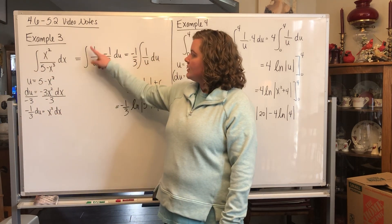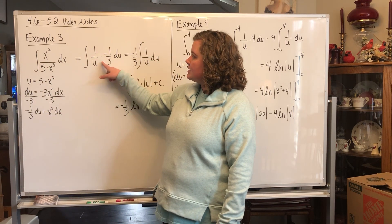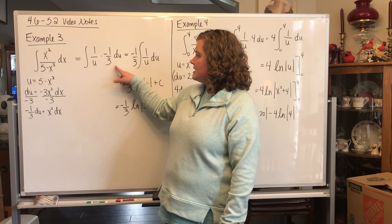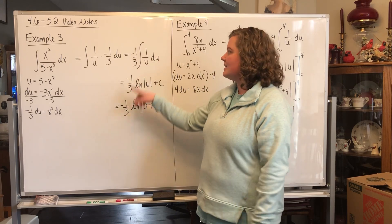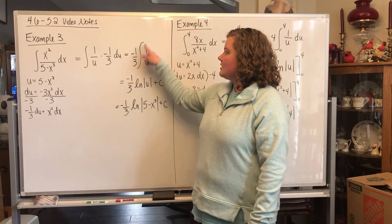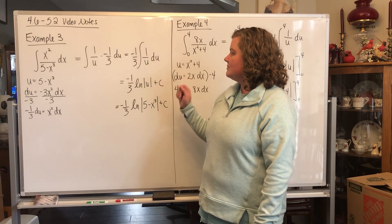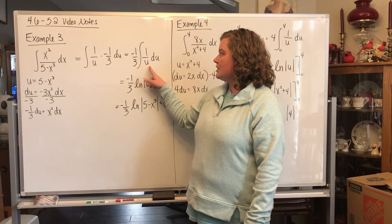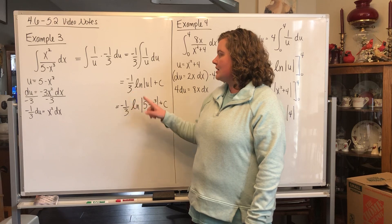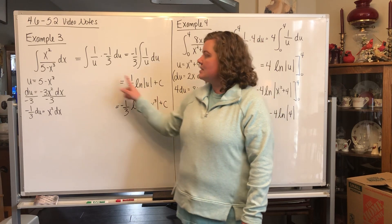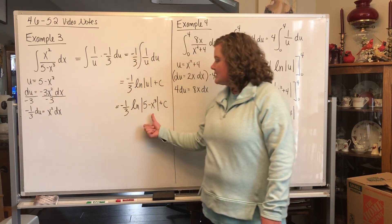You're going to do the antiderivative of 1 over u times negative 1 third du. Remember, the negative 1 third is just a numerical coefficient, so it moves to the outside. You have negative 1 third times the antiderivative of 1 over u du. The antiderivative of 1 over u is just the natural log of u plus c. Bring down that negative 1 third, and then we replace the u with 5 minus x cubed.